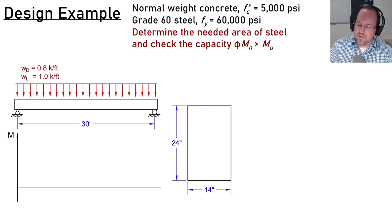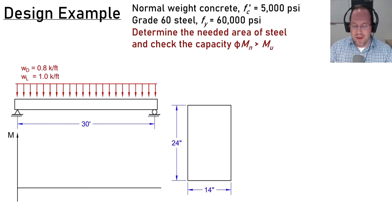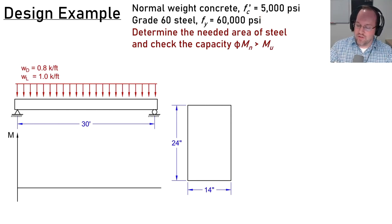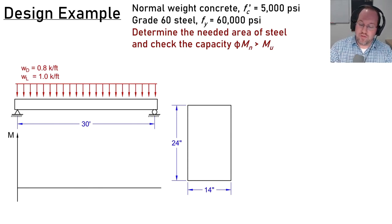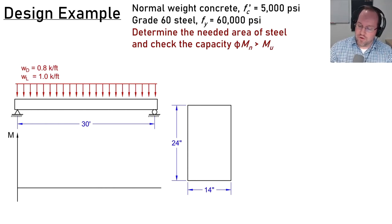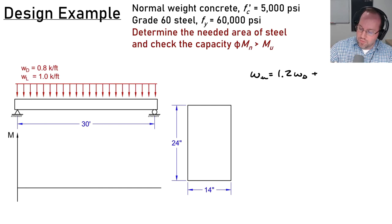We have a simply supported beam 30 feet in length with a dead load of 0.8 kip/ft and live load of 1 kip/ft. We have normal weight concrete with 5,000 psi and Grade 60 steel. I'd like to determine the necessary amount of steel and check capacity to ensure it meets demands. First we calculate the factored moment demand. The factored load w = 1.2 × dead load + 1.6 × live load.